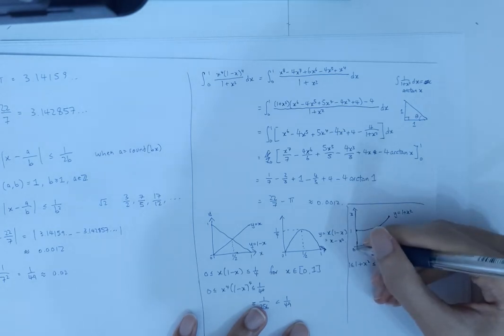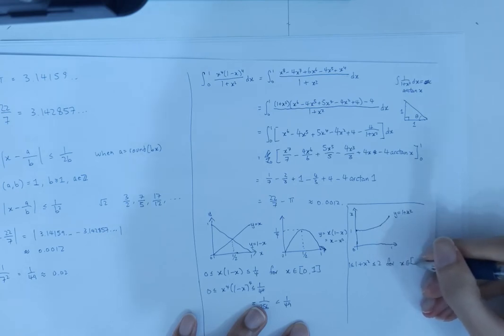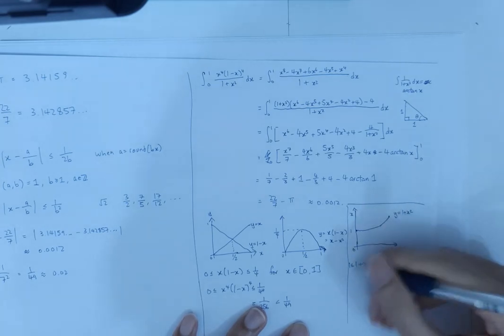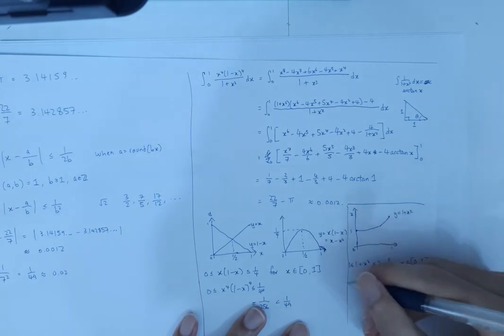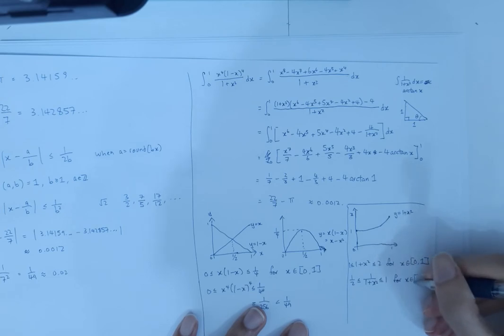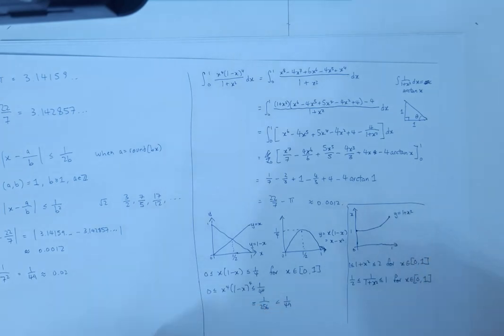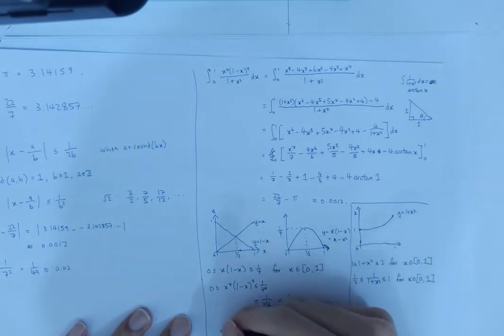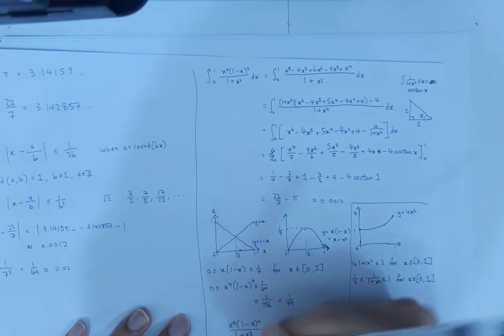As long as x is between 0 and 1. And the reciprocal of this, well, then you just flip the whole thing over. So now that we have this thing is less than 1 over 256 and this thing is always between half and 1, then we can conclude that x power 4 times 1 minus x power 4 divided by 1 plus x squared is always between 0 and 1 over 256 multiplied by 1.